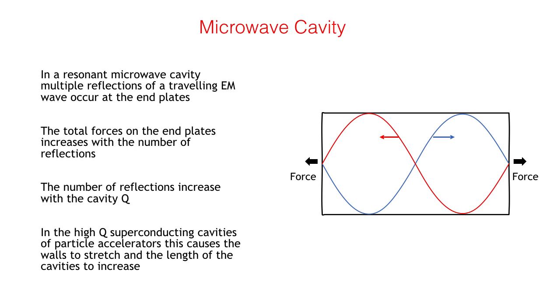An extreme example of this is the superconducting cavities in high energy particle accelerators where Q values can be in excess of 1 times 10 to the 9th. This causes large forces on the end plates which stretch the niobium walls of the cavity and illustrate the potential for high thrusts in a superconducting M-Drive thruster.